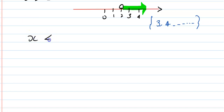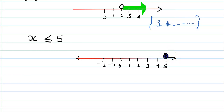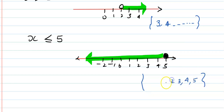Let's see one more example: x less than or equal to 5. We draw a number line with 0, 1, 2, 3, 4, 5, minus 1, minus 2. Less than or equal to 5 — is 5 included? Yes, included, because there is an equal sign. So 5 is included, and all values less than 5 are taken. The solution set is: 5, 4, 3, 2, 1, 0, minus 1, and it keeps going.